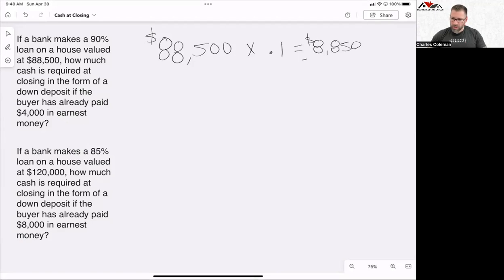Well, they already dropped off $4,000 in earnest money. That dollar does go towards the purchase of the home. And so what we need to do is take that and subtract it from the $8,850, and that gives us $4,850.